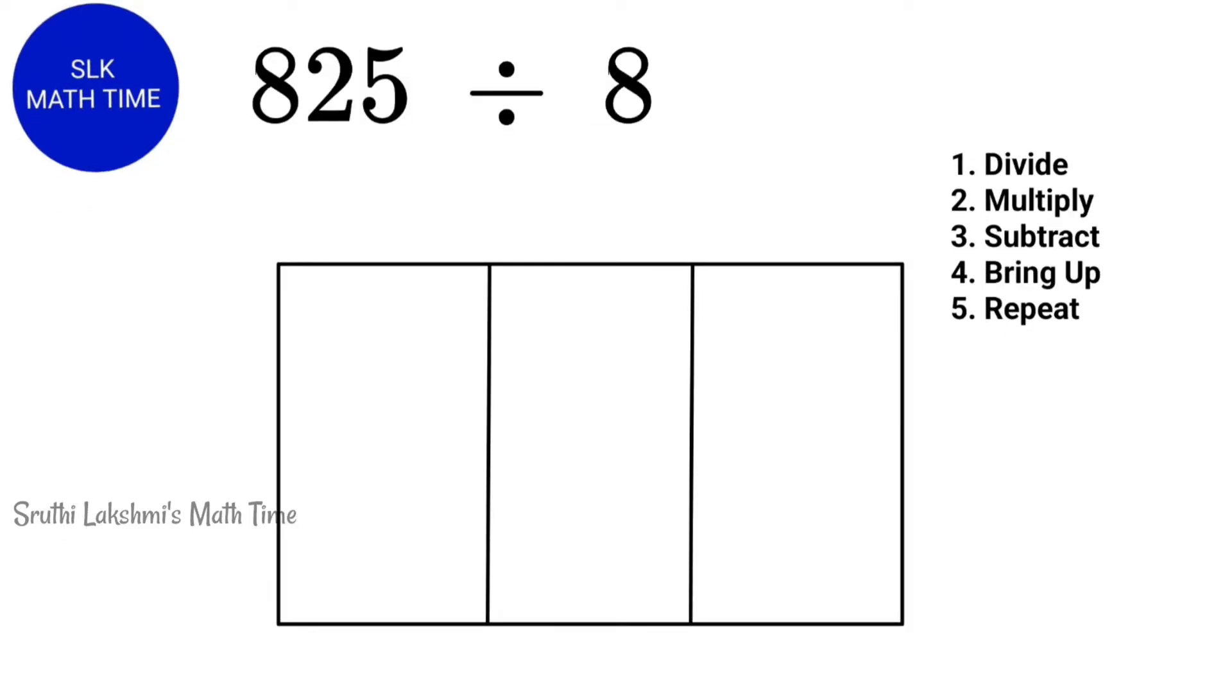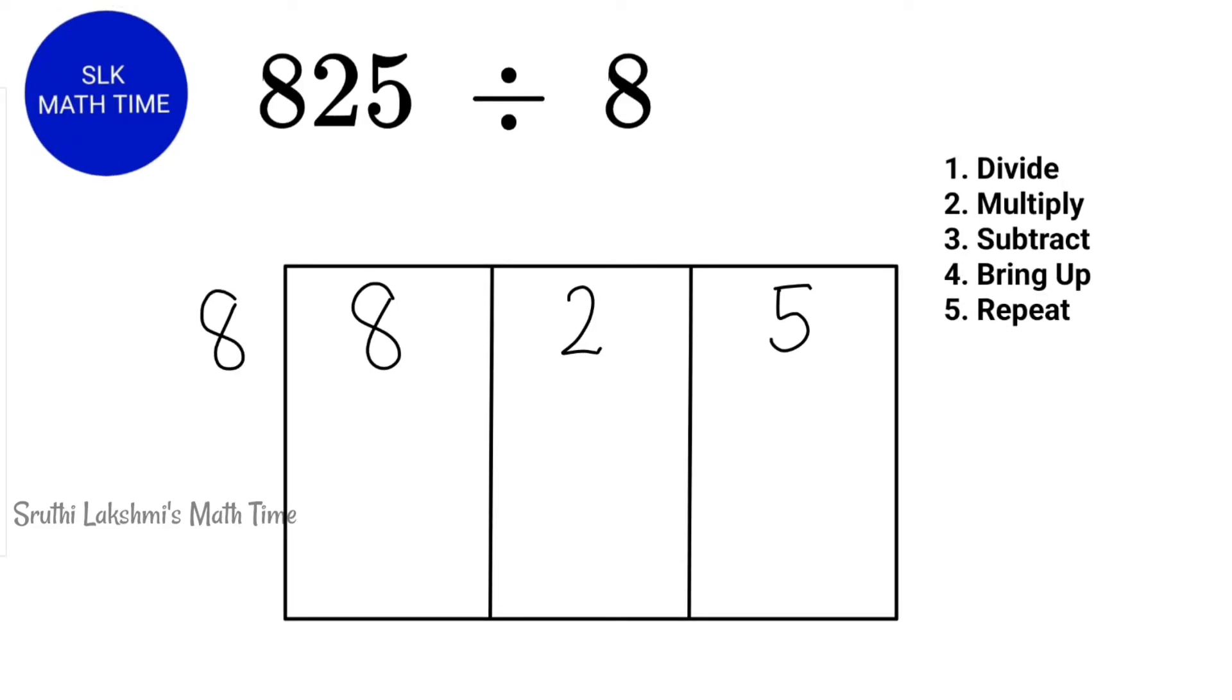Now, let's take a look at another example, which is 825 divided by 8. Here, 825 is the dividend and 8 is the divisor. So, we are going to write 8, 2 and 5 like this and write the divisor 8 outside the rectangle. Now, we are going to divide.